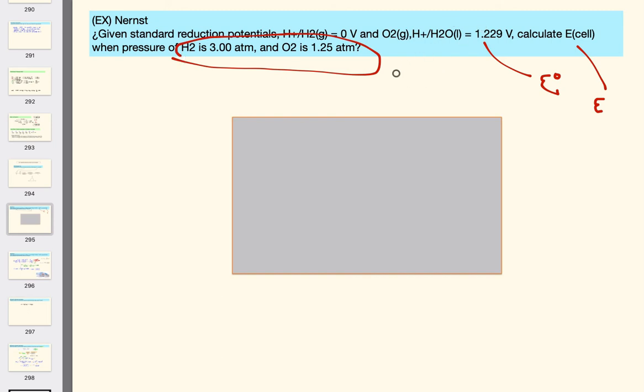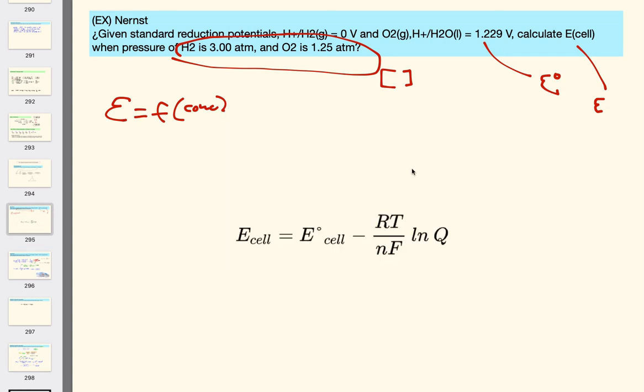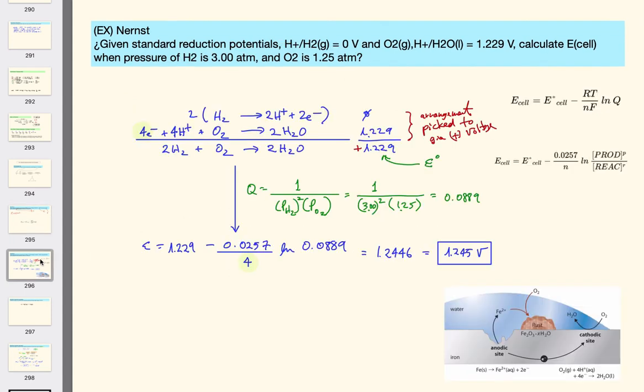We know we have the E for the standard cell. Well, it's asking us for E for the cell as it exists at non-standard conditions. We're also given information about the products, H2 and O2. So, we now have a relationship between E and concentrations, and usually when you see that, the potential as a function of concentration, it's probably what? The Nernst equation. And here's what that's going to look like. These are the two reactions that they gave. We write them down.